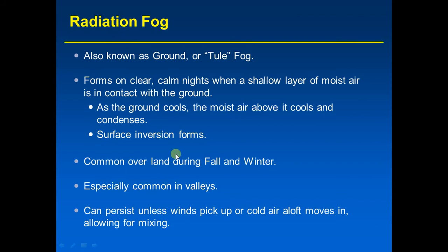Radiation fog is common over land during fall and winter when nights are long and in valleys where cold, dense air sinks down. The fog can persist unless winds pick up and mix the air out. If winds do not pick up, it can sometimes last for long periods. Radiation fog varies in depth — from just a few feet to over a thousand feet high — and is always stationary. It can reduce visibility to near zero, less than a quarter mile, making driving very hazardous in the Central Valley during winter.